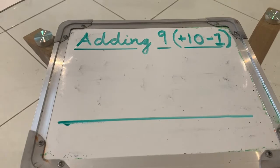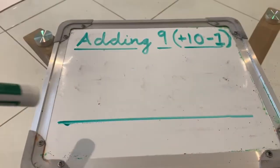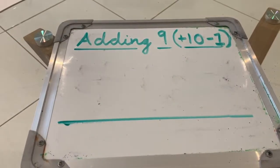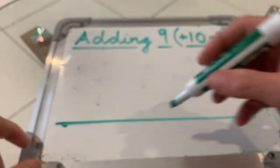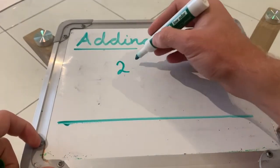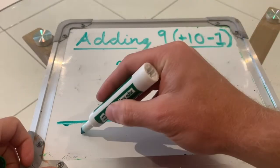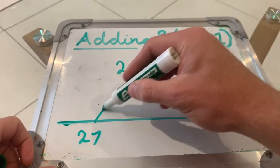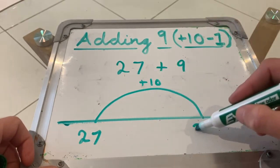It's just as easy to add 9s because all you need to do is add 10, but then take one back because we know that 9 is 1 less than 10. An example of that would be 27 plus 9. So what I would do here is 27 plus 10, which gives me 37.